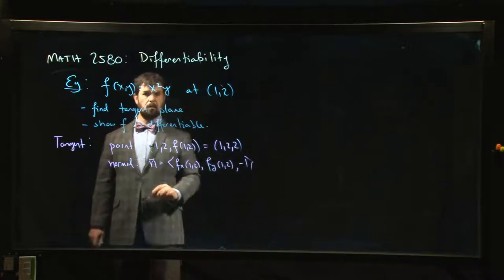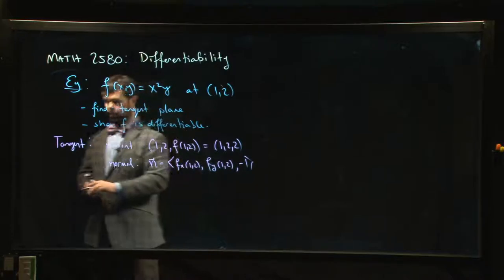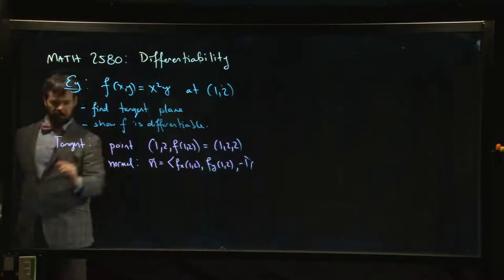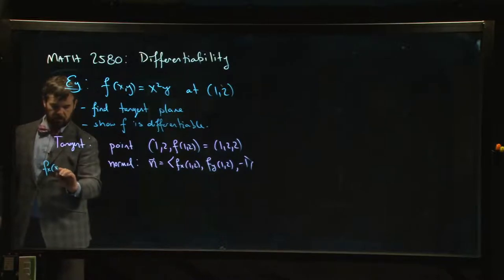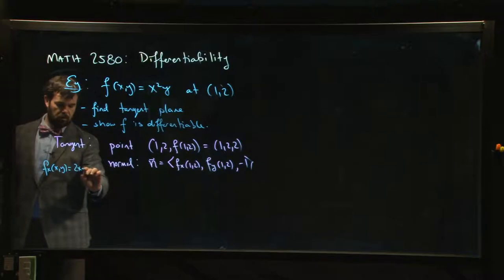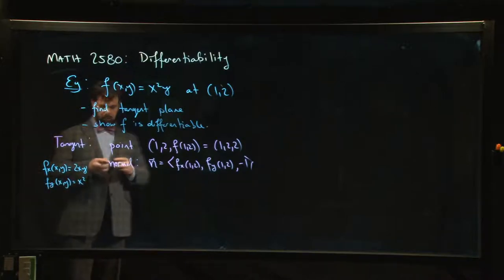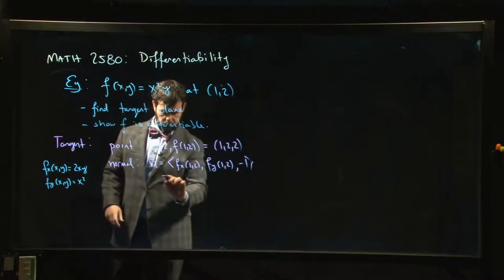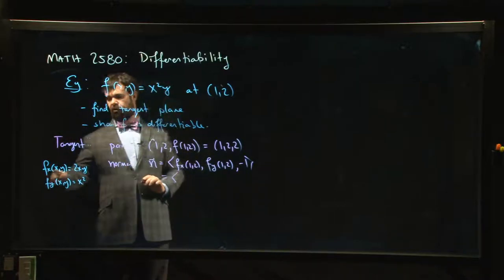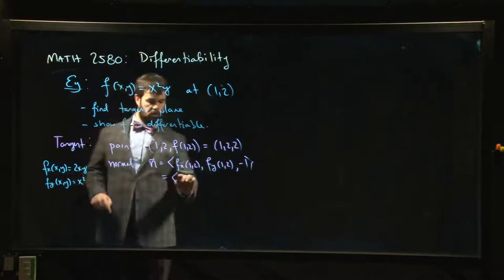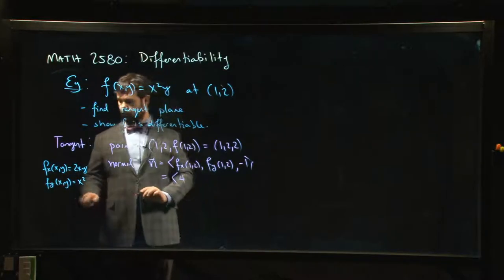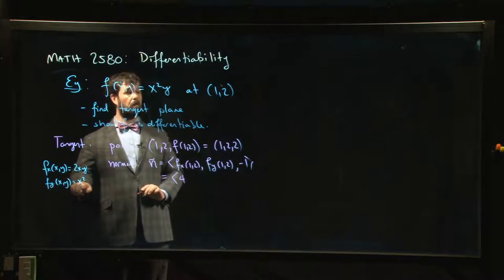Let's just kind of do that as rough work over here on the side. What's the x derivative? The x derivative at (x,y) is 2xy. The y derivative is x squared. So when I plug in the numbers for the x derivative at (1,2), I'm going to get 2 times 1 times 2, I get 4.